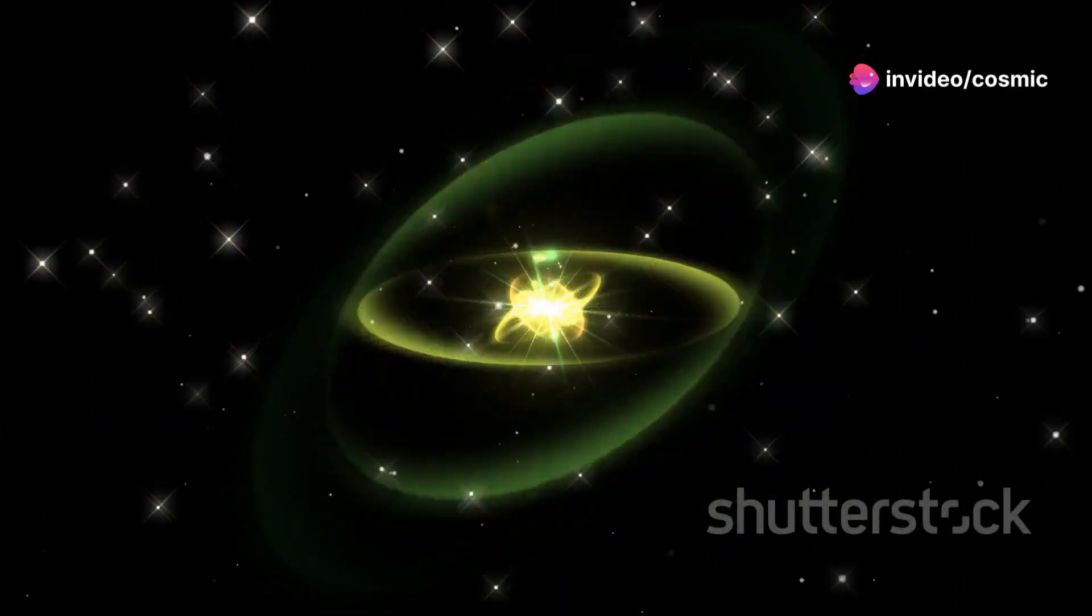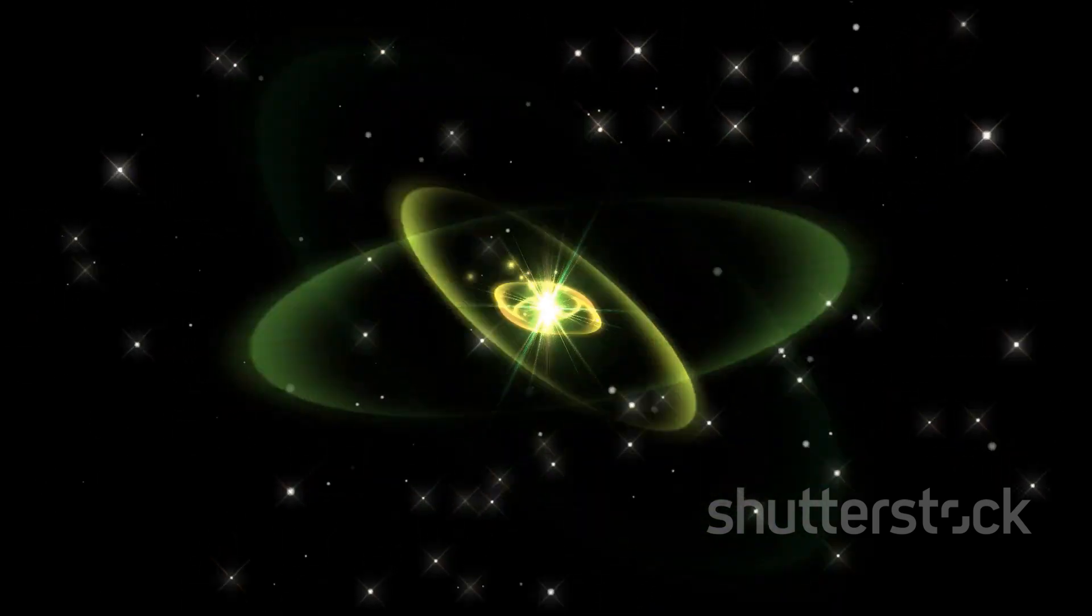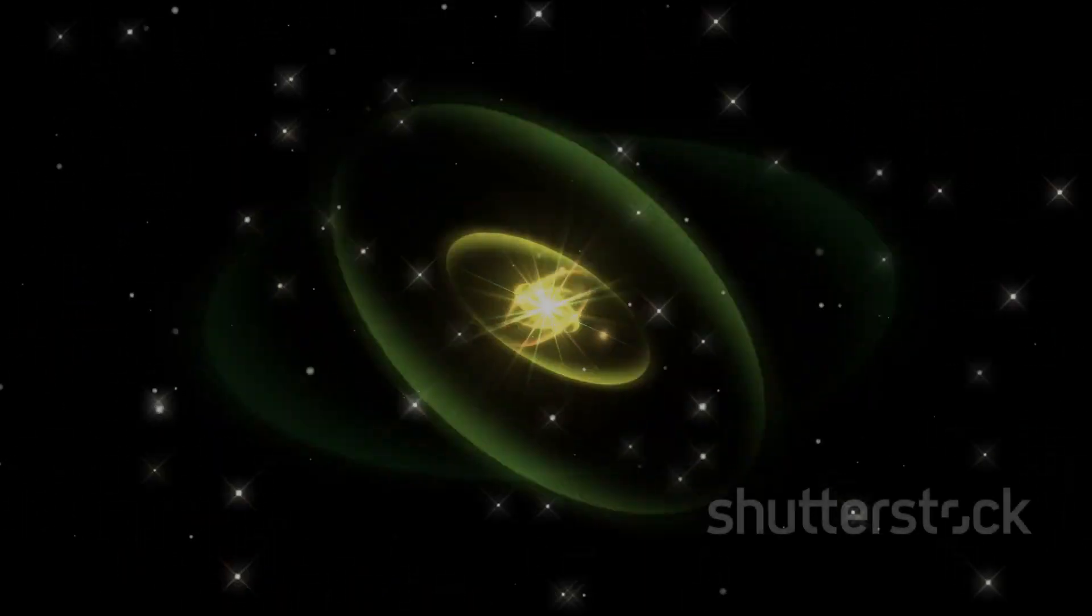As they spin, these beams sweep across space, creating a rhythmic pattern detectable from Earth. If Earth happens to be in the path of these beams, we detect a pulse of radiation, hence the name pulsar. It's like receiving a cosmic signal.